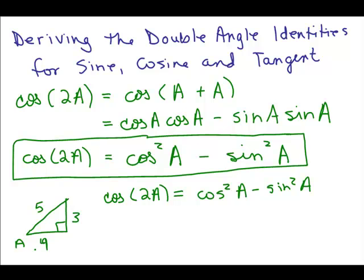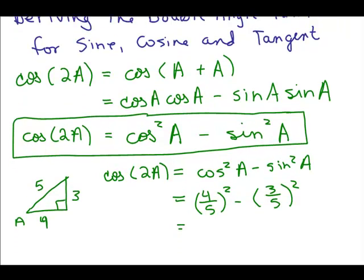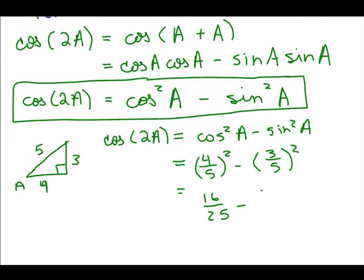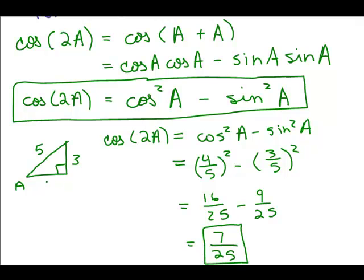I need to know the cosine of A in order to square it. The cosine of A is 4 fifths, so I need to square that. And the sine of A is 3 fifths — need to square that too. Then we do some arithmetic: 16 over 25 minus 9 over 25 equals 7 over 25. So if I know the cosine or sine of one angle, I can figure out the cosine of double that angle.